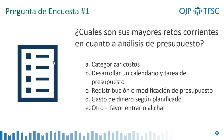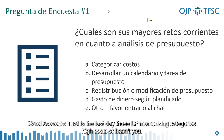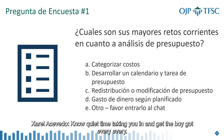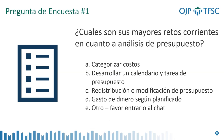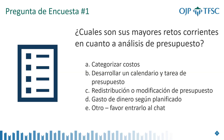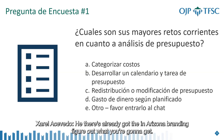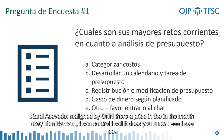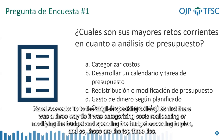We see that there is a three-way tie among the challenges. The first is categorizing costs — there's a sense of instinct about what category things should fall into. The second is redistribution or modification of the budget, which can be difficult because it's not always clear what steps to take. The third is spending the amount of money according to plan. So to our English-speaking colleagues, the top three tied challenges were: categorizing costs, reallocating or modifying the budget, and spending the budget according to plan.